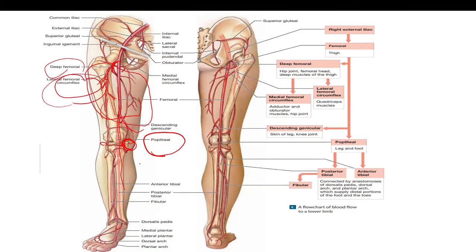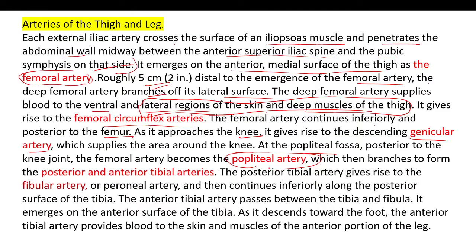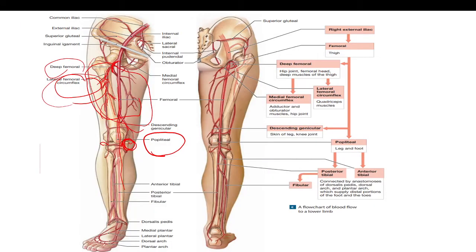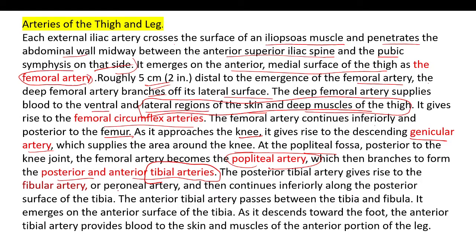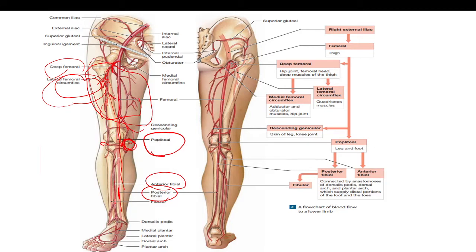The femoral artery continues inferiorly and posterior to the femur as it approaches the knee, giving rise to the genicular artery around the knee joint and the popliteal fossa. Posterior to the knee joint, the femoral artery becomes the popliteal artery. The popliteal artery then divides into the anterior tibial artery and the posterior tibial artery.